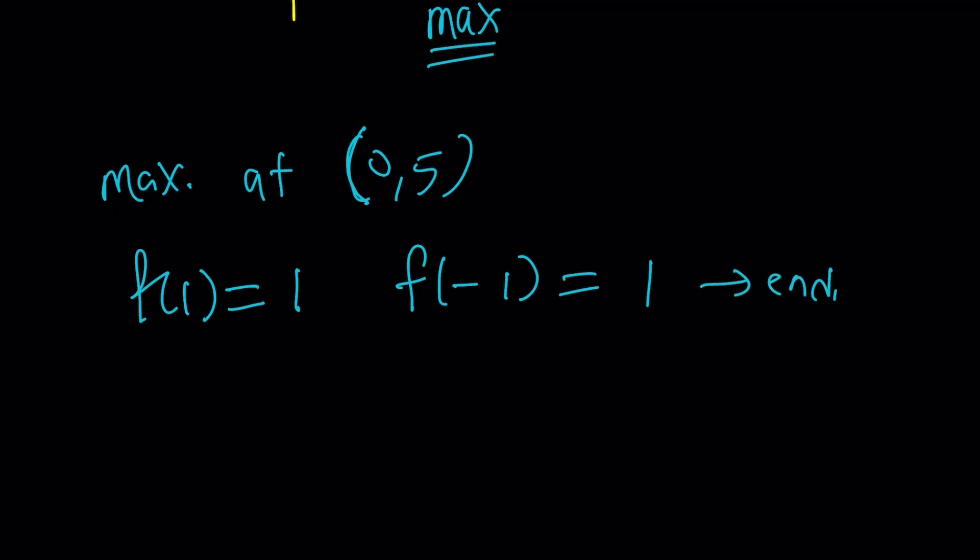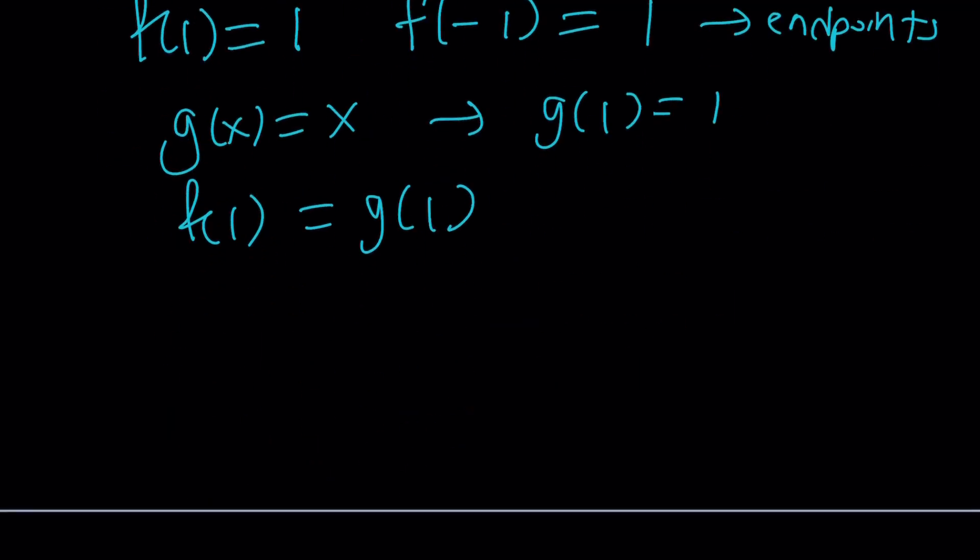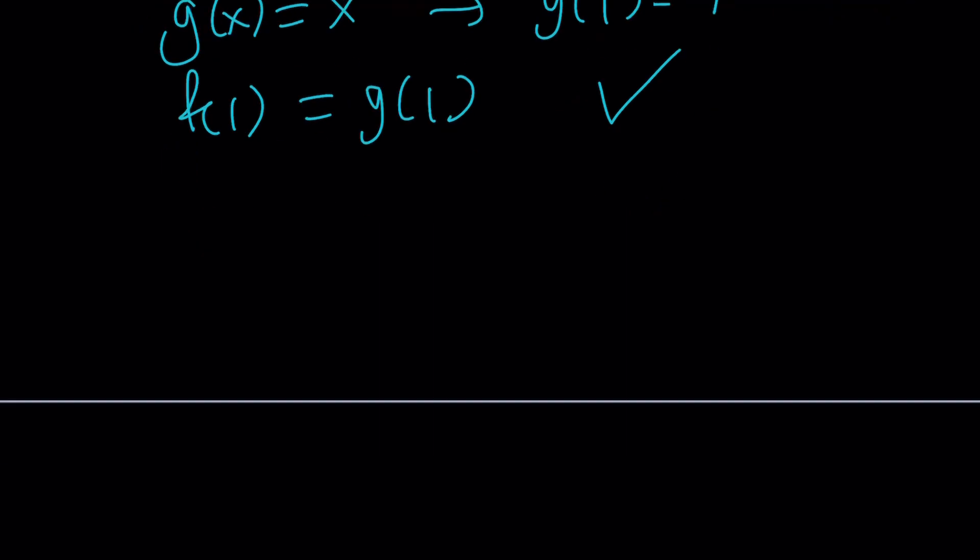These are the endpoints, and you know what that means? Suppose g of x is equal to x. G of 1 is also 1, which means f of 1 equals g of 1, and yay, we have a solution. Let's go ahead and look at the graphs, and then we will verify those results.